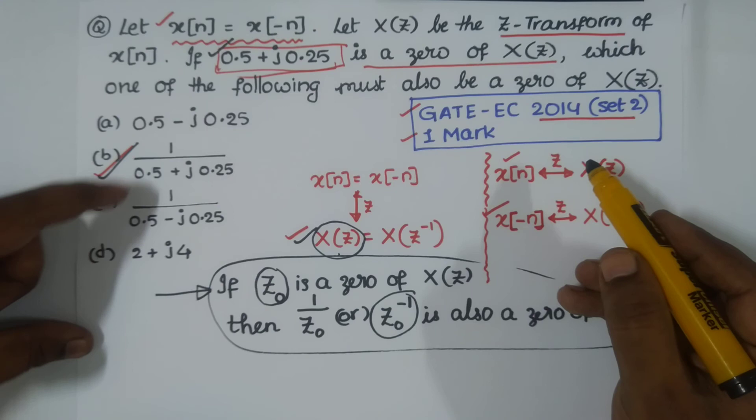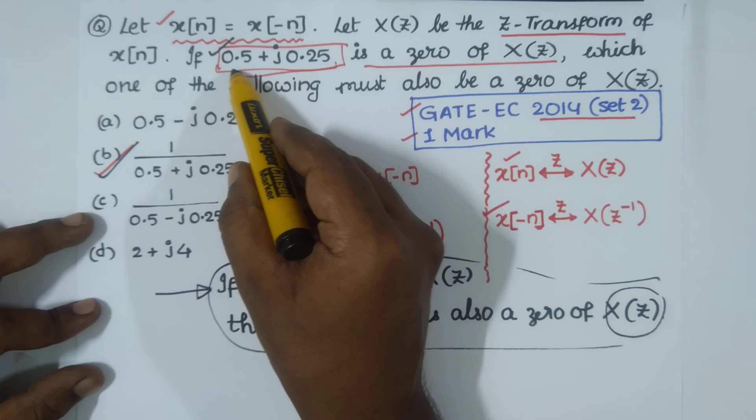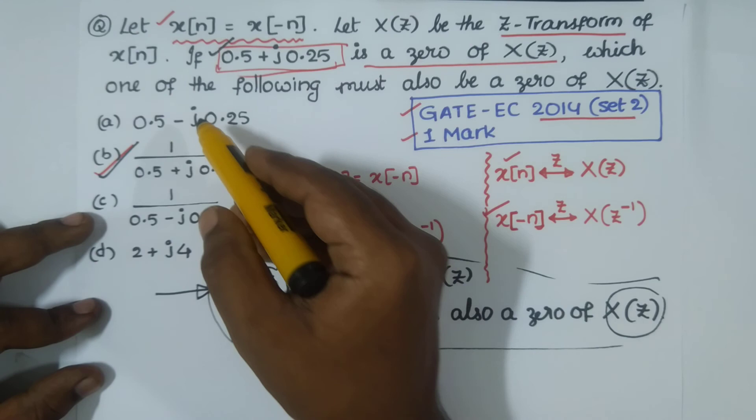Sometimes what we do is, without doing anything, we would think that 1/Z_0 as 1/(0.5 + j0.25) equals 0.5 - j0.25, and then we go for it.